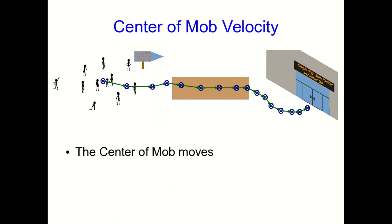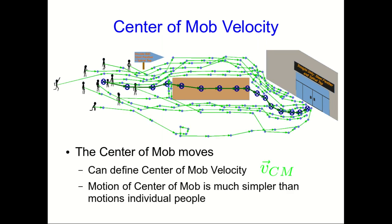And the mob moves, so the center of mob will move, and so you can define a center of mob velocity. And one thing to notice is that the center of mob's motion is going to tend to be much simpler than the motions of the individual people, because in the averaging process, the complexities of their motions will tend to cancel out.